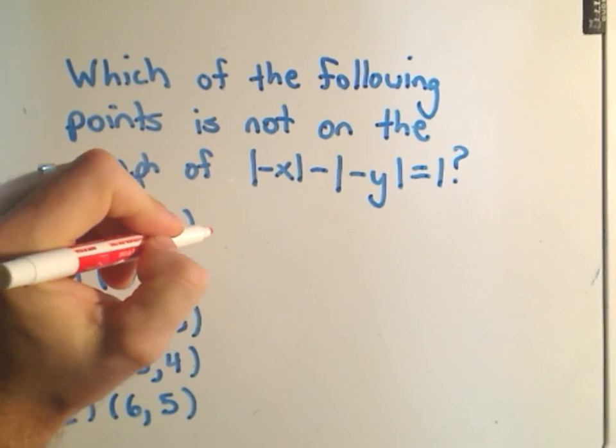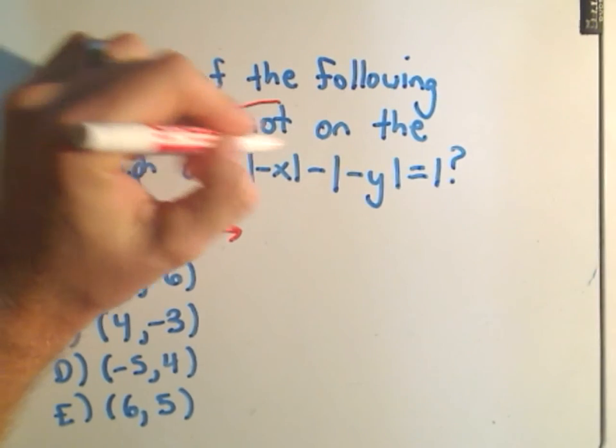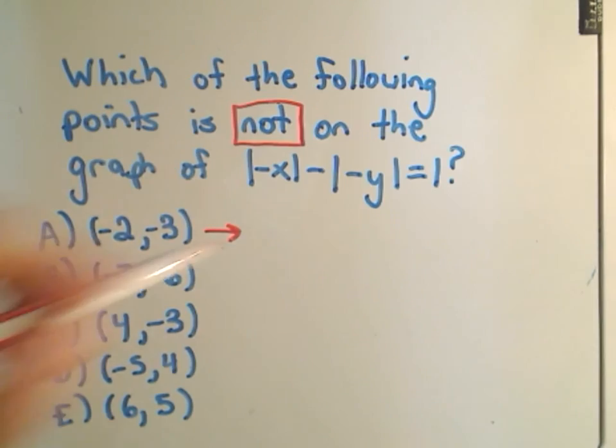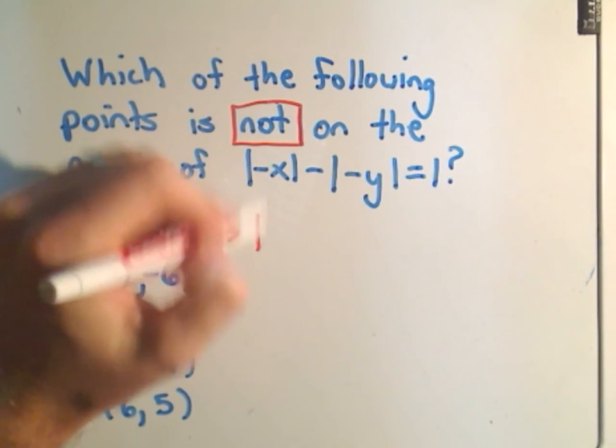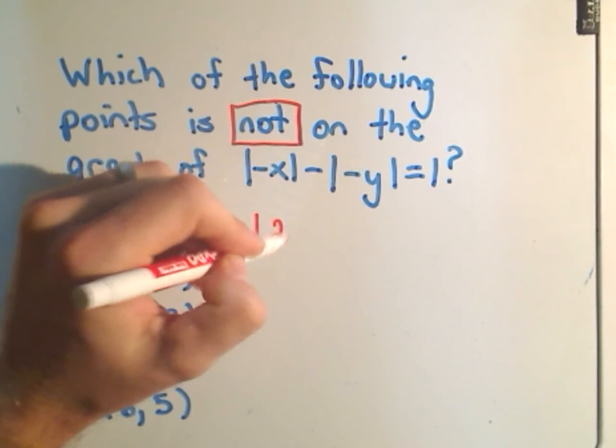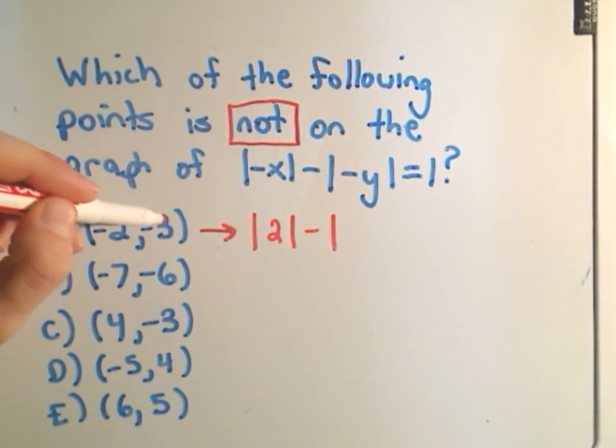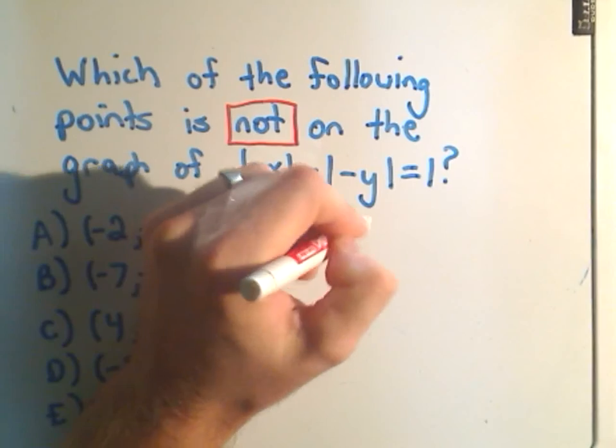So let's see. Again, we have to make sure we're finding which one is not on the graph. So if we plug negative 2 in—if we take the absolute value of negative negative 2, we'll get positive 2. Minus, if we plug in negative 3, we'll get positive 3.